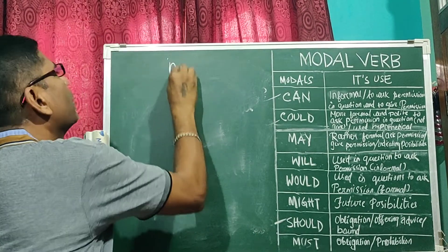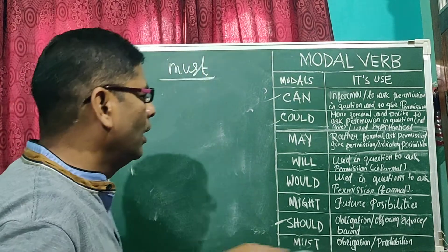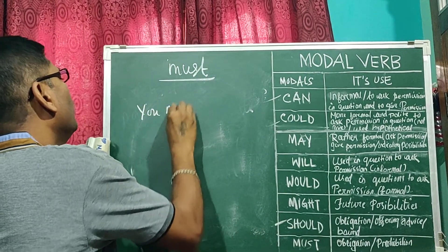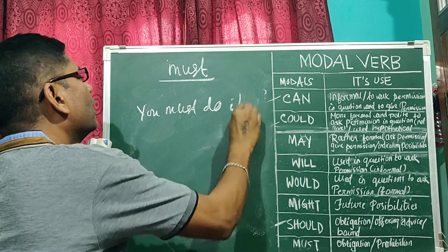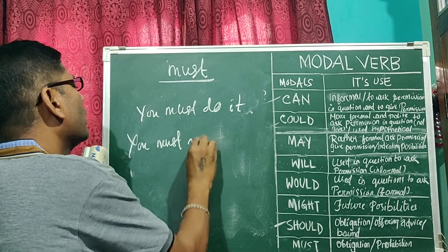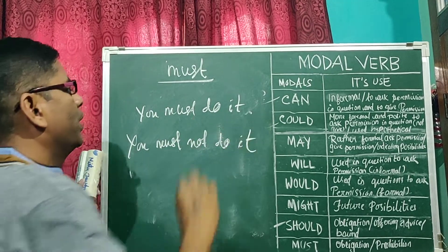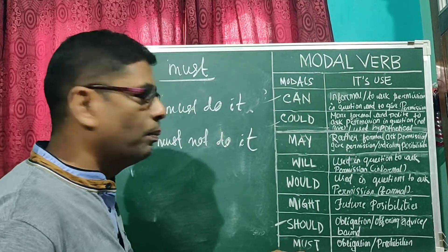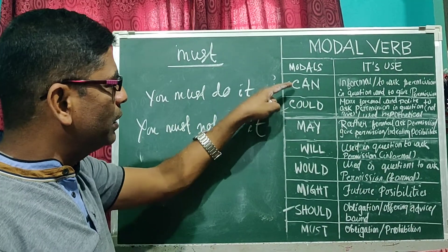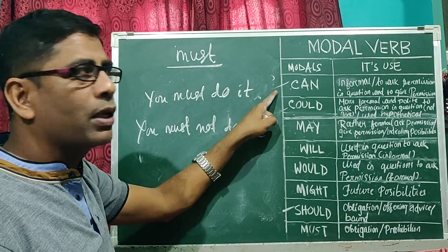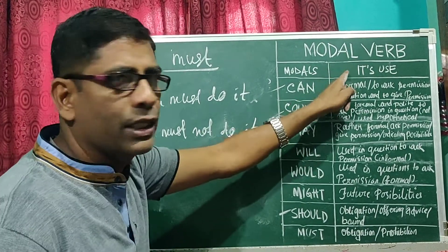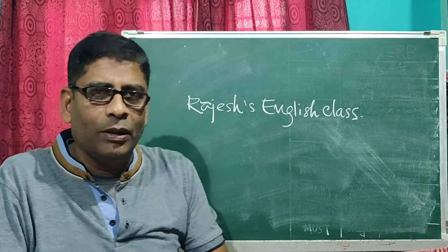Now, must. Must is used for obligation and prohibition. For example: you must do it — this is obligation. And in the negative form — you must not do it — this is prohibition. In both these ways we use must. So this is all about the modals. There are 13 modals, and out of these 13, these 8 modals are used frequently. These are the 8 important modals and their uses.